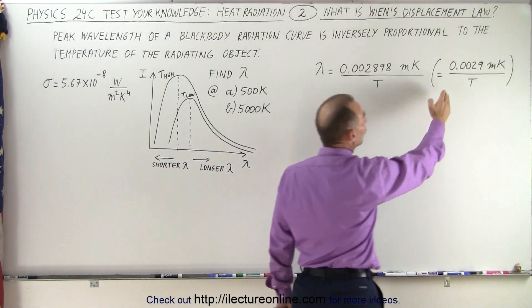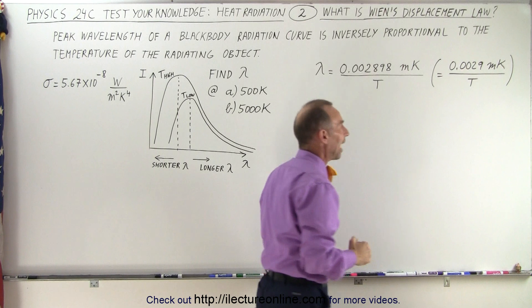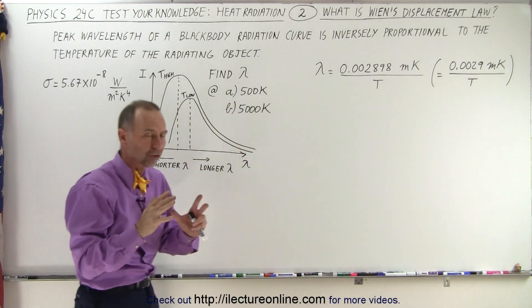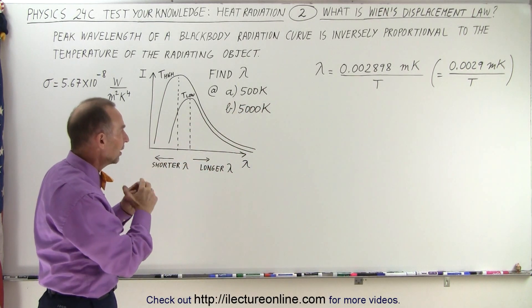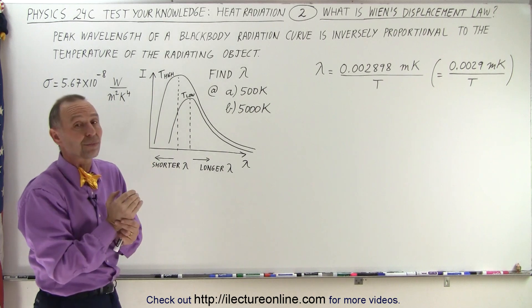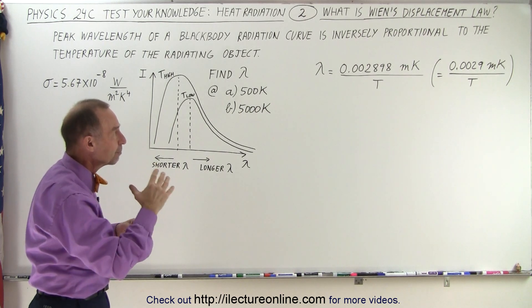For short, we typically use 0.0029, which is accurate enough, because it's very difficult to measure the exact temperature or the exact wavelength of that peak radiation.